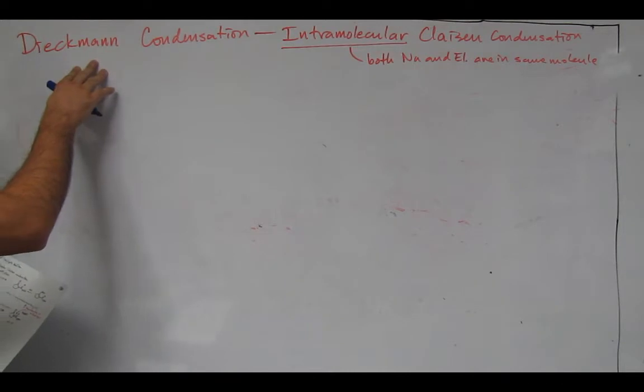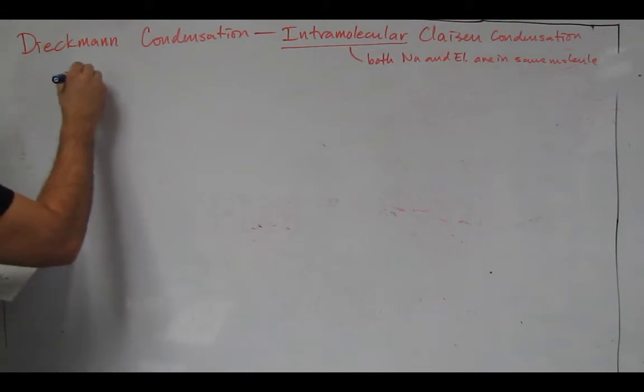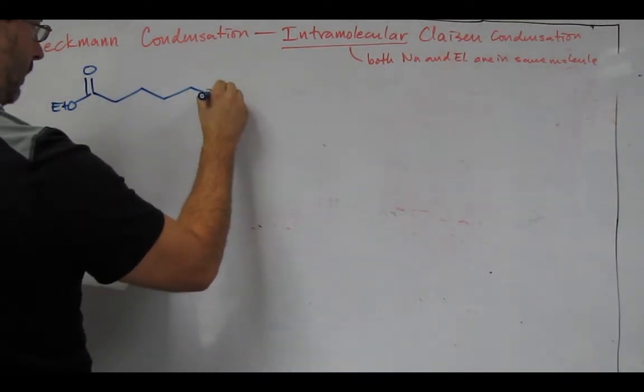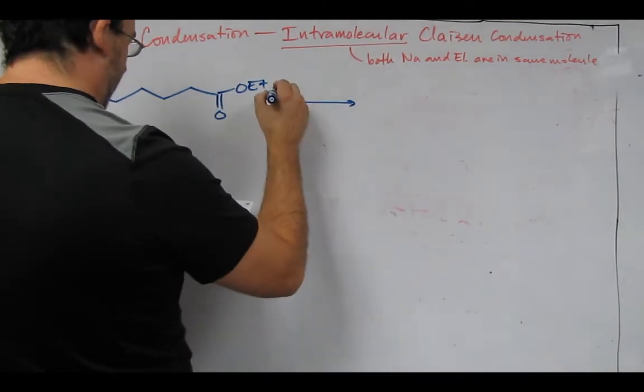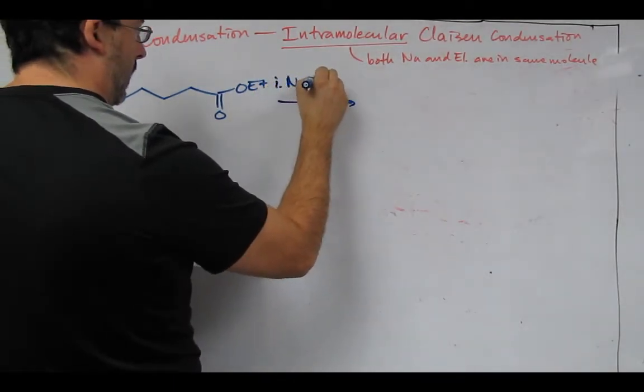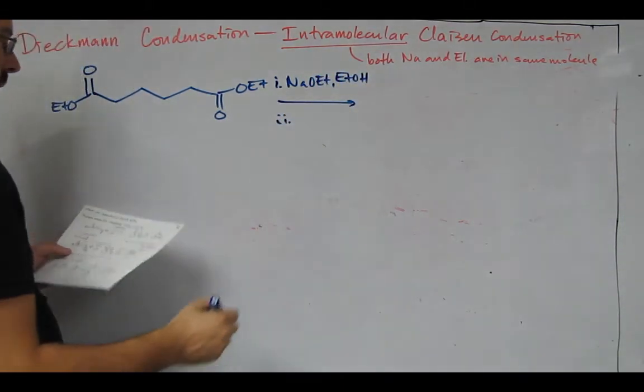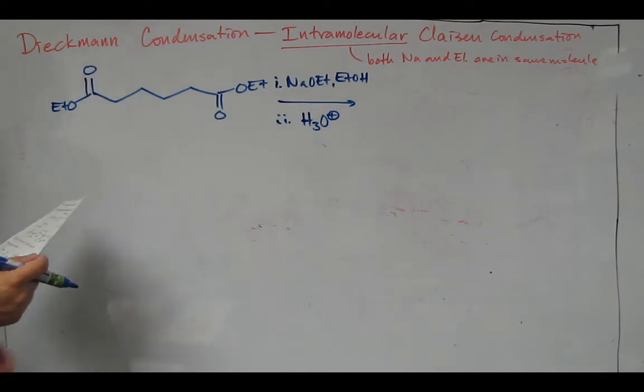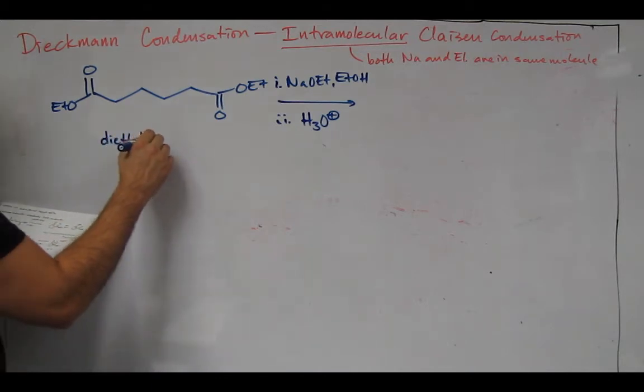So a Dieckmann, for it to be intramolecular, it's going to be a molecule that has two esters. So the example we'll look at is the following. This is a diester. We are going to treat that under the standard conditions of base, so sodium ethoxide and ethanol. And then remember the driving force to complete the reaction, we have to do an acidic workup to do the final protonation. This molecule, being a diester, is called diethyl adipate.